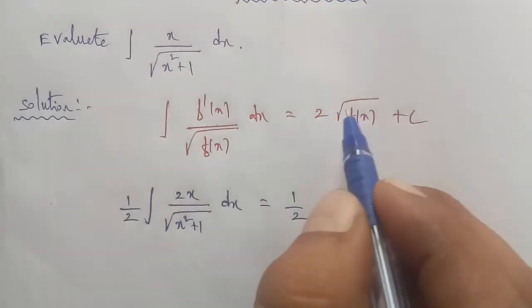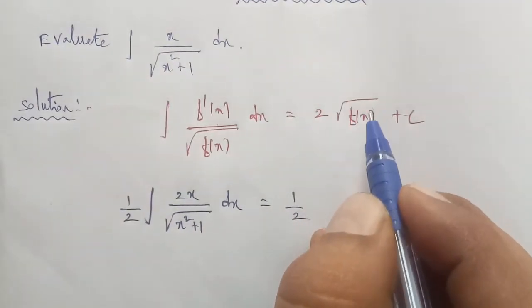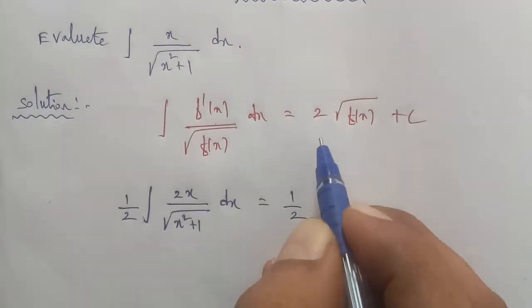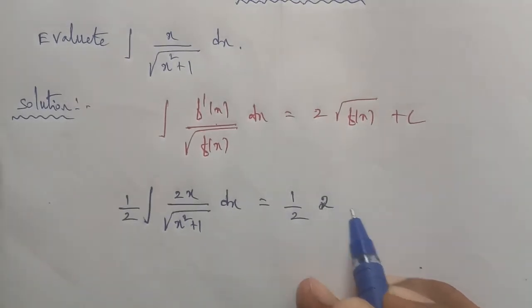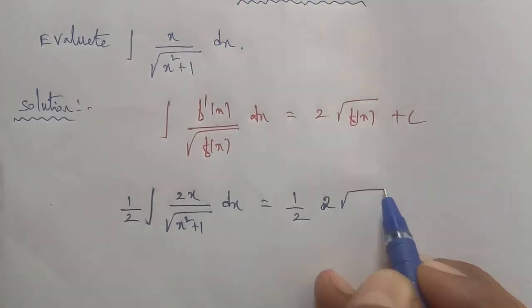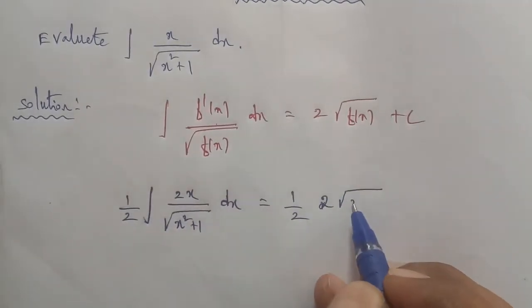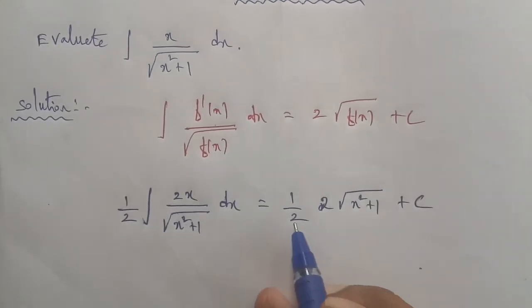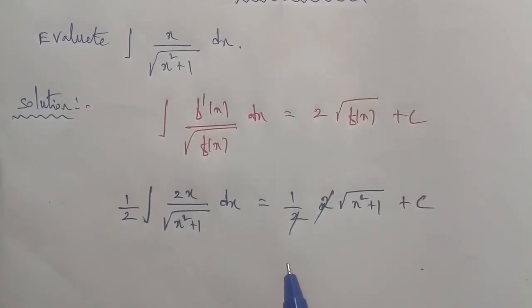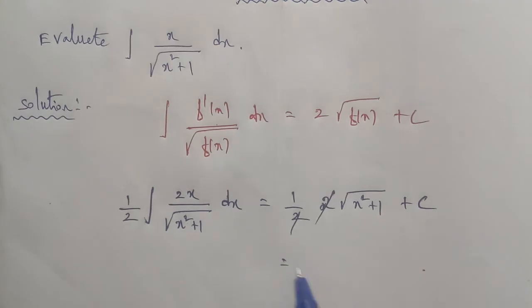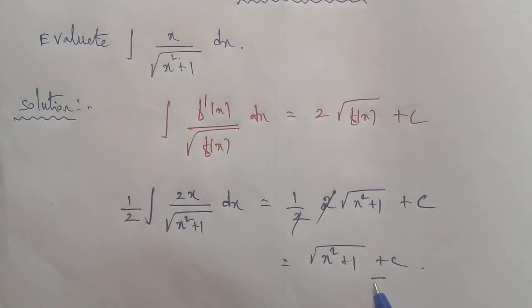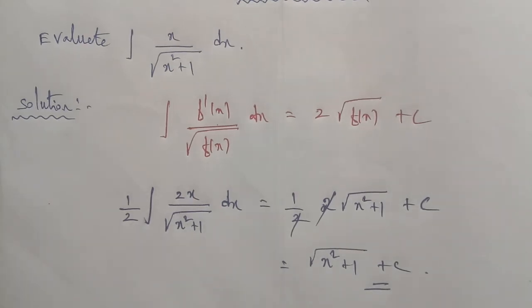Applying the formula, the integral becomes one-half times 2 times square root of f(x), where f(x) = x squared plus 1, plus c. The 2 and the one-half cancel each other. Therefore the final answer is square root of x squared plus 1 plus c. Thank you.